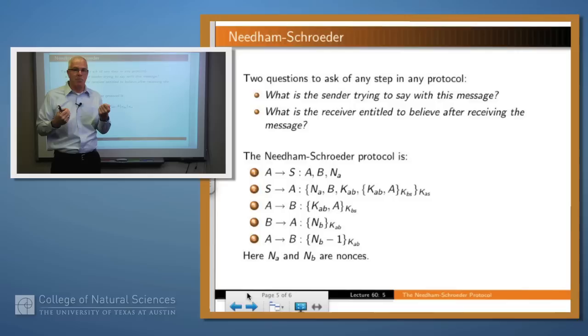So after step two, A has the key. It has K, A, B, but B doesn't yet. And so in step three, A sends to B that additional piece of information, which was shoved into that message two, and it contains the key and A's identity encrypted with K, B, S.